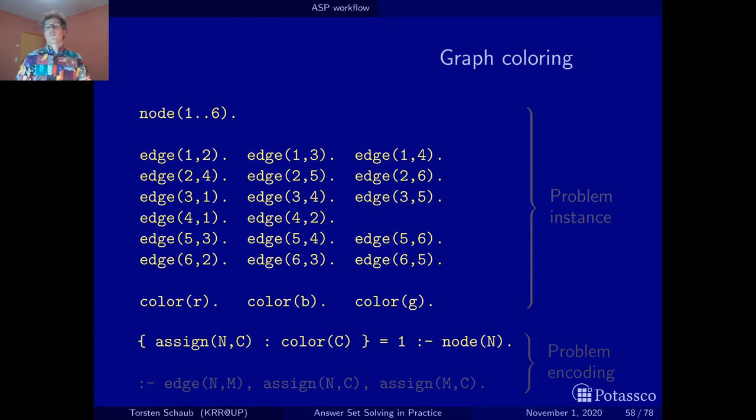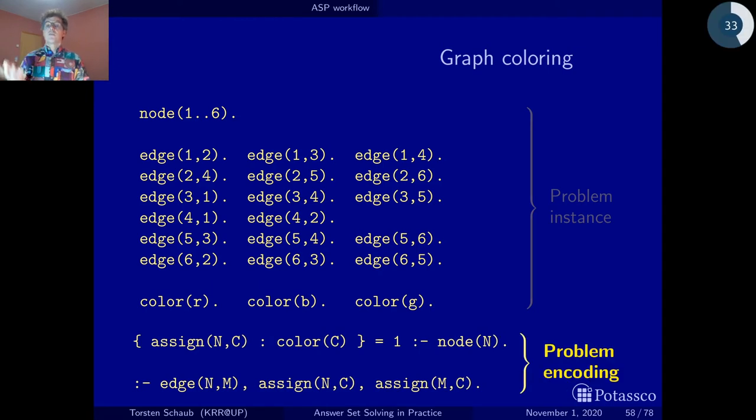Now if you just take this problem instance and this constraint, you push the button, give it to an ASP solver, you may get solutions where everything is painted in red, everything is painted in green, or everything in half red, half green, because we have not yet excluded candidate solutions in which adjacent nodes get the same color. And this is done with an integrity constraint, which says that if I have two nodes N and M that are connected, it cannot be the case that two connected nodes N and M have been assigned the same color. And that's it. This is the problem encoding. We see actually that both of these ASP rules reflect in a one-to-one way the constraints in our natural language description.